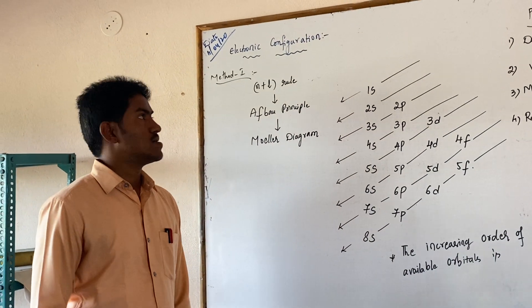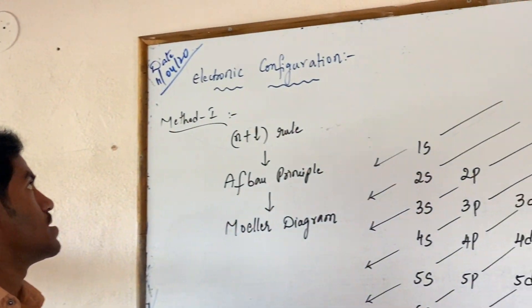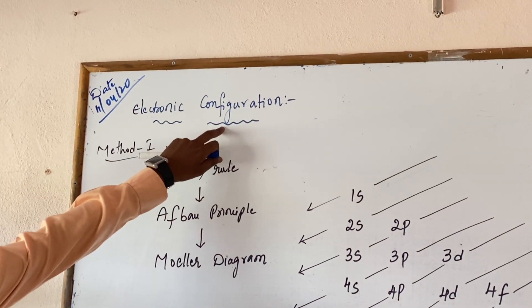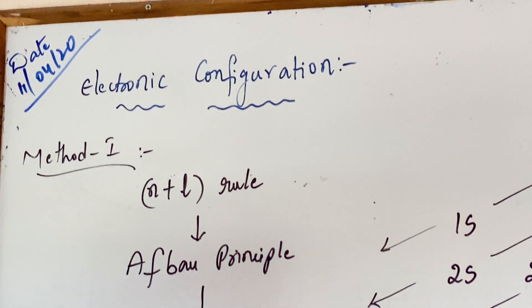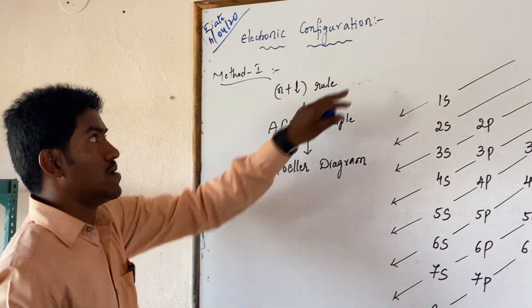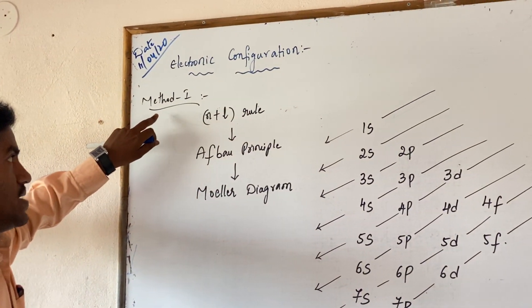My name is Karthik and this will be related to sister class people. Today we are going to discuss about electronic configuration. Electronic configuration defines as filling of electrons into the available orbitals. It follows majorly three methods.